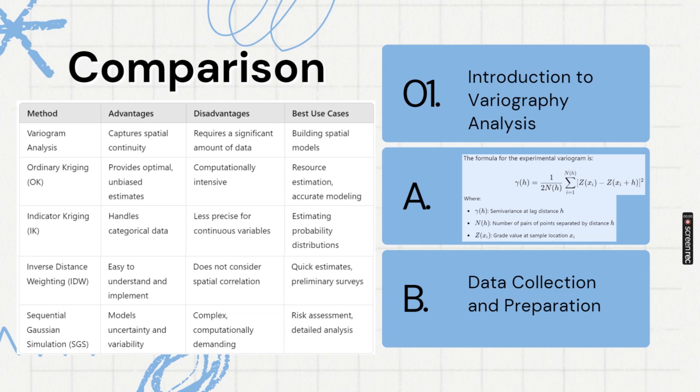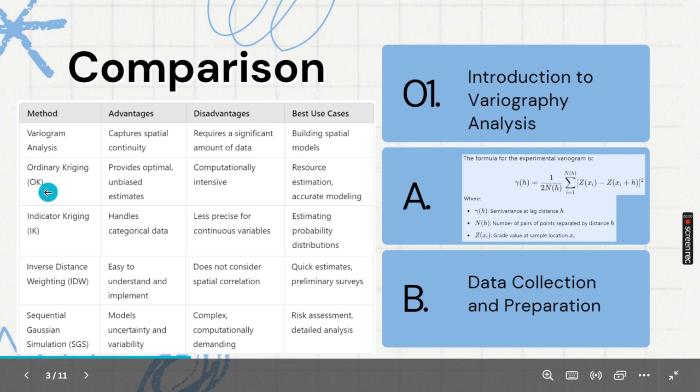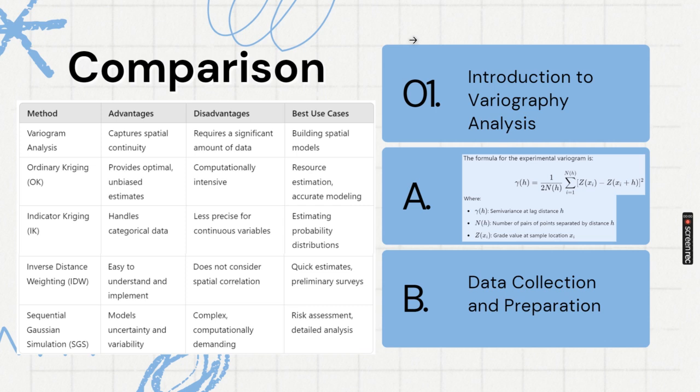It is very essential. In this brief way, if we compare: variogram analysis, kriging is subdivided into ordinary and indicator kriging—for our purpose ordinary kriging is good enough—then inverse distance weighing and sequential Gaussian simulation. These four methods of geostatistical estimation are good enough. These four methods, if you have an idea, that's it.